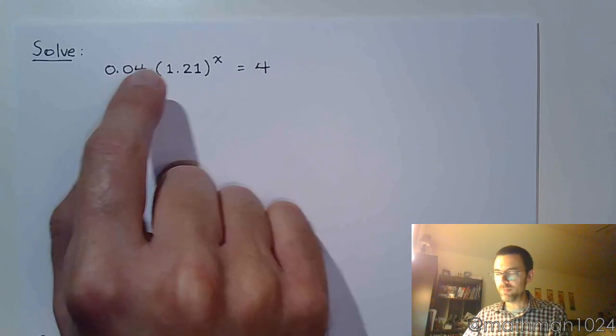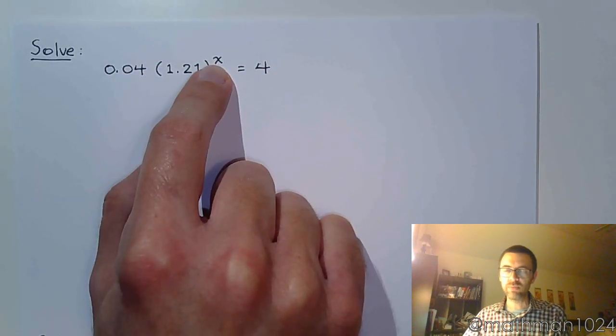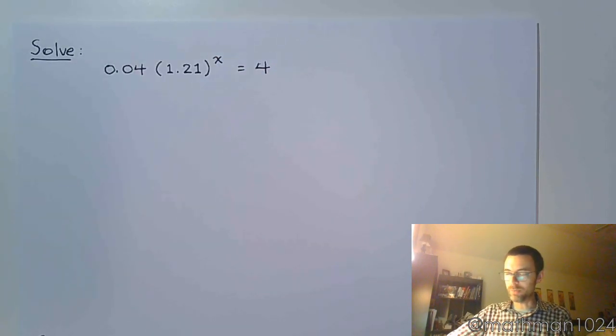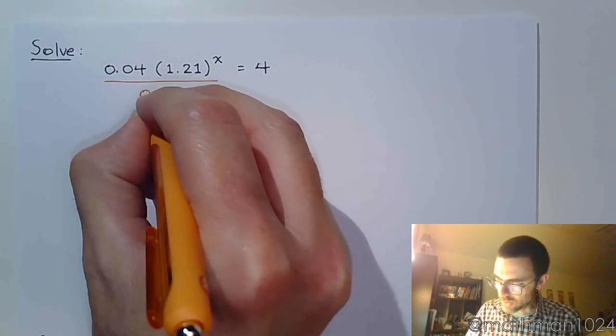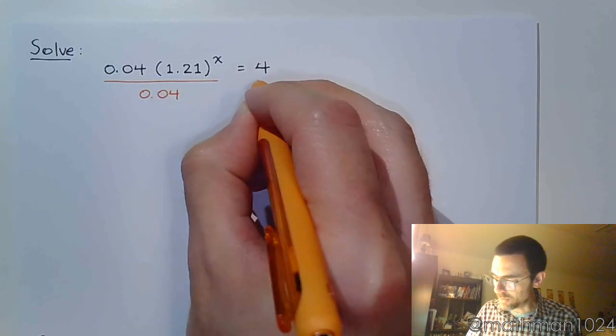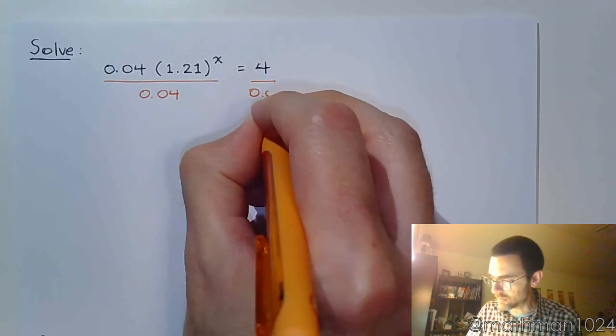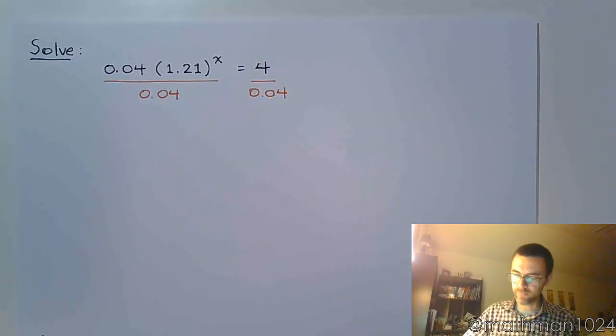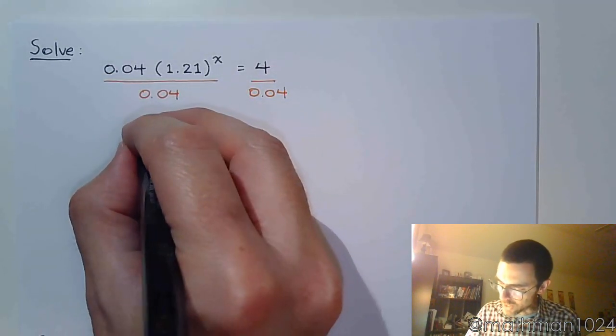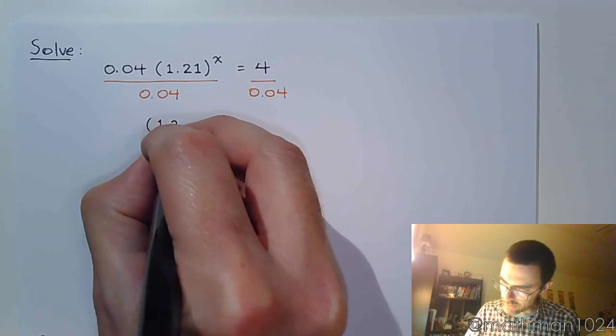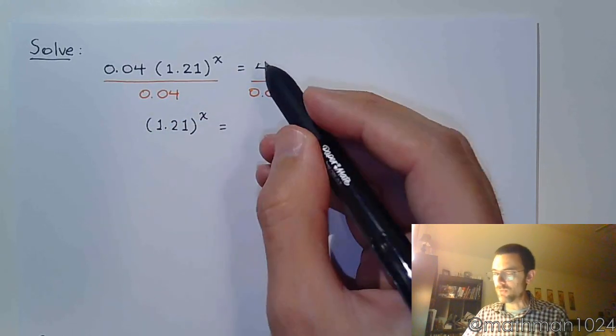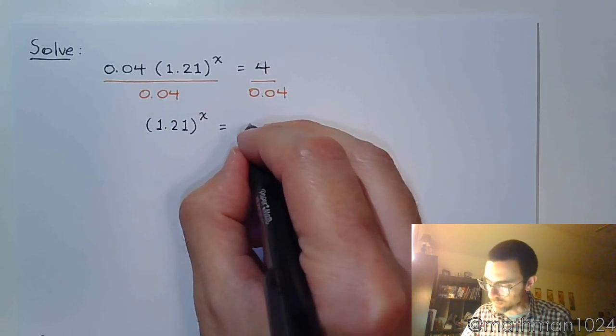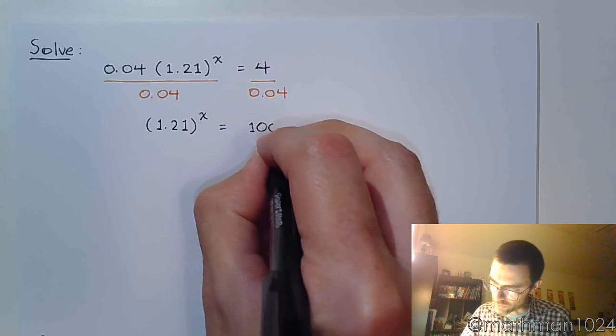This 0.04 has no business with the x. So I'm going to go ahead and divide both sides by that. So divide by 0.04 on both sides. And now we have 1.21 raised to the x. 4 divided by 0.04 is 100.